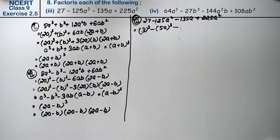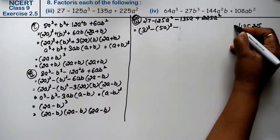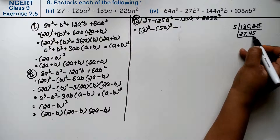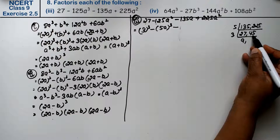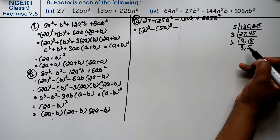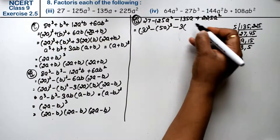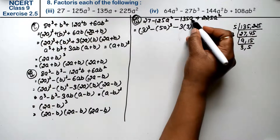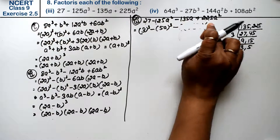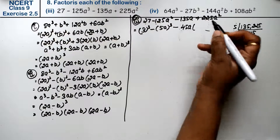Now, minus is taken common. What else can be taken common? If it's not clear by looking, work out the factors of 135 and 225 on the side. We get 5 common, and also 3 common, giving us 5 into 3 into 3 — that is, 45 — as the common factor of the middle terms, along with a.